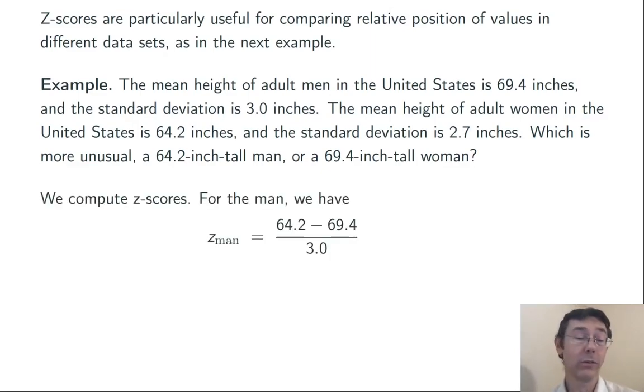Let's compute some z-scores. So for the man, we have 64.2 minus 69.4 over 3. So you take his height minus the average height of men and divide it by the standard deviation of men. We get negative 1.73. So this individual would be 1.73 standard deviations below the mean height of men.